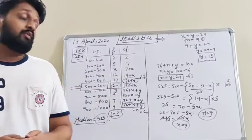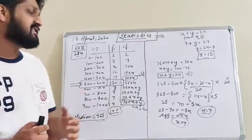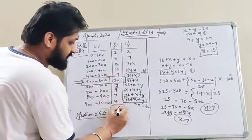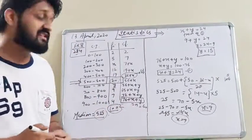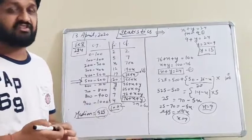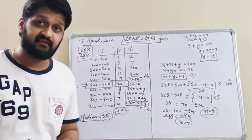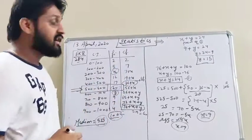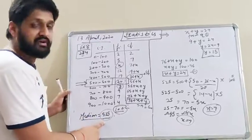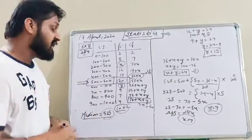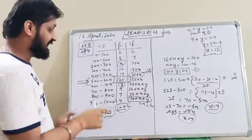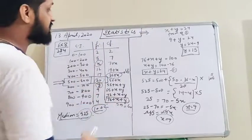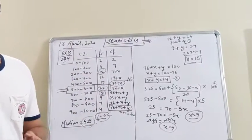This is a less-than type median question where we had to find the values of x and y. The class intervals and frequencies were given, the sum of frequencies was 100, and the median was given as 525. Since we had to find the median in most questions, but here the median is given and we need to find unknown variables. Since the median is 525, it lies between 500 and 600 — that becomes the median class with lower limit 500 and frequency 20.